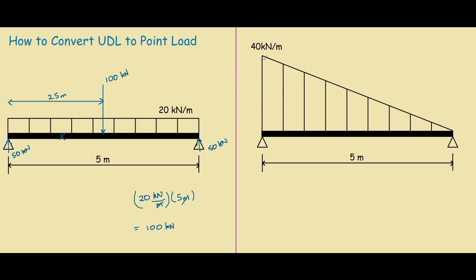Same idea, to find the equivalent point load, you need to convert this area of this triangle into a force. So the area of a triangle is simply half times base, which is 5, times 40. So half of 5 times 40 is 200, divided by 2 is 100.